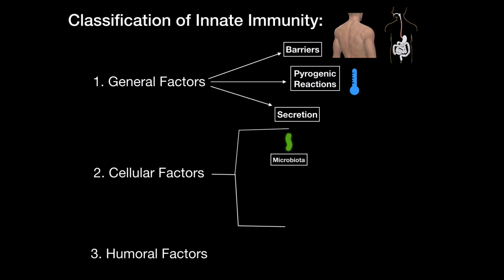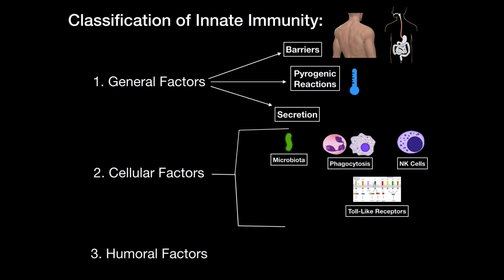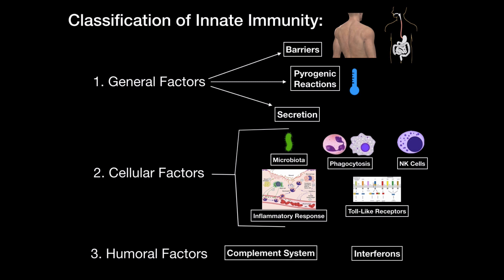The cellular factors include your own microbiota fighting for space and food. Phagocytosis by cells like neutrophils and macrophages — they do that by the different receptors they have on the surface. We also have natural killer cells, which are really important for the antiviral immune response. These cells can bind to the surface of antigens by using toll-like receptors, which usually leads to an inflammatory response. We also have humoral factors, which include the complement system and the interferons.